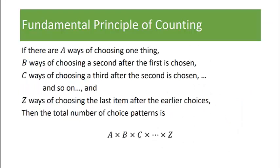Up next is something called the fundamental principle of counting, which says if there are A ways of choosing one thing, B ways of choosing a second after the first is chosen, C ways of choosing a third after the second is chosen, and so on, and Z ways of choosing the last item after the earlier choices, then the total number of choice patterns is A times B times C all the way down times Z.